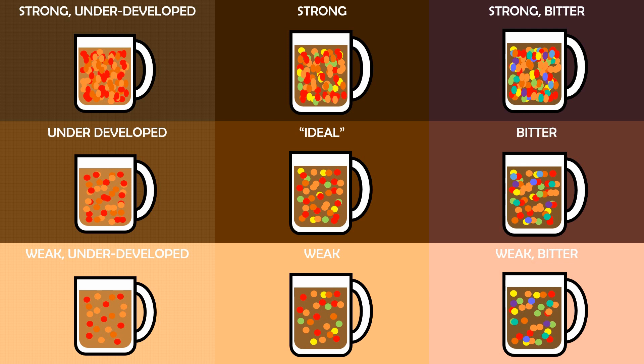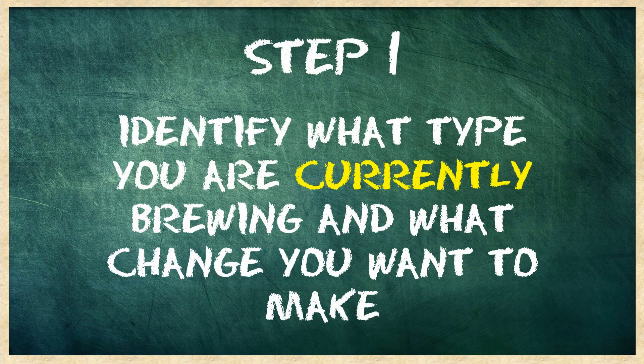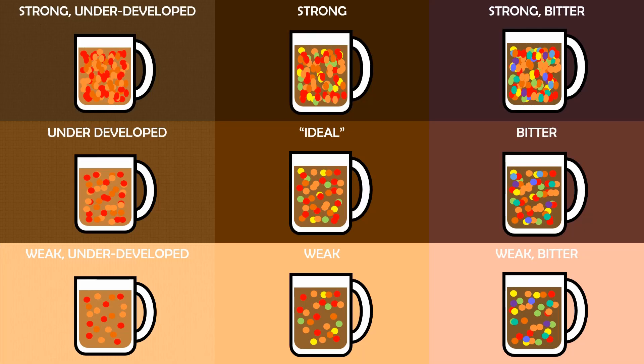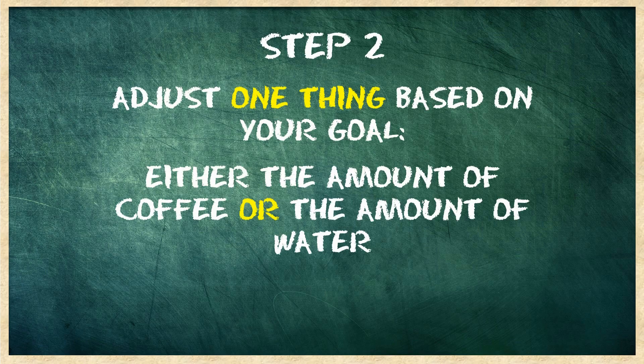These two factors combine to give us nine potential cups of coffee from each brew. So what do we do with this information? The first step is to identify what type you are currently brewing and what change you want to make. To understand where we want to go, we first have to understand where we are. Take a minute to look at this grid and figure out where you fit today and where you would like to be.